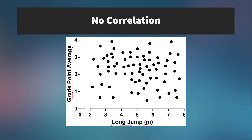In the no-correlation case, we couldn't plot a line with any meaningful slope — the line of best fit would be approximately horizontal.